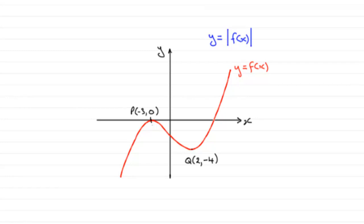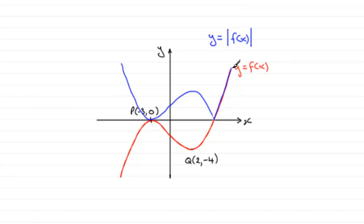So if we do that transformation, this is what we get. I've mirrored just this part of the graph in the x-axis, and you can see it here. Then the part of y equals f of x that stays above the x-axis just stays exactly the same. Removing y equals f of x and leaving the dotted graph, you can see we've got y equals mod of f of x as this graph.